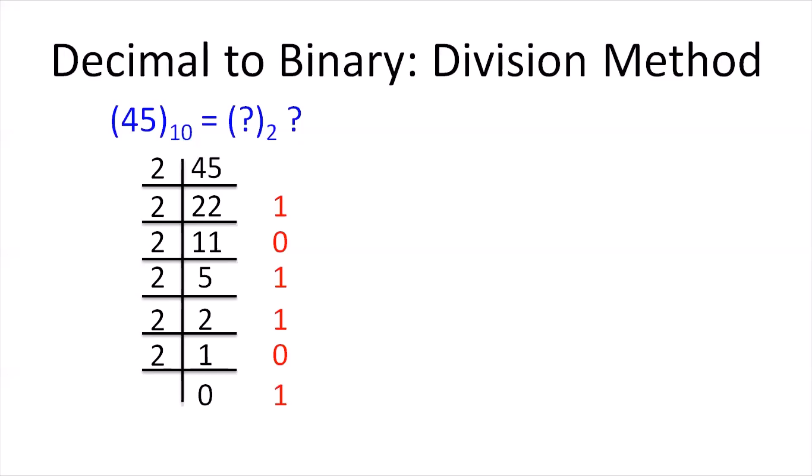Now, considering the list of the remainders in a bottom-up fashion, we get the binary equivalent of 45, that is 101101.